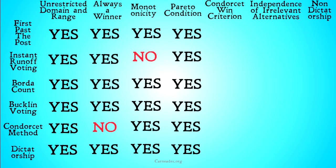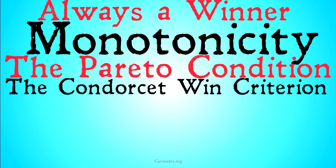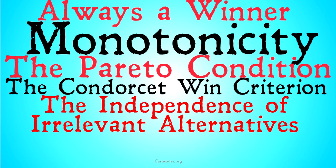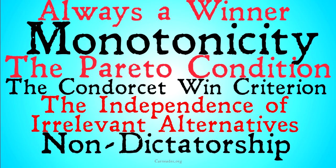It seems like at this point all these systems are going to do so well — there's going to be a lot of systems that fill all these conditions. You would think that right here. In the next couple of conditions, we're going to have a few problems. Next up is the Condorcet winner criterion, followed by the independence of irrelevant alternatives, and finally, non-dictatorship.